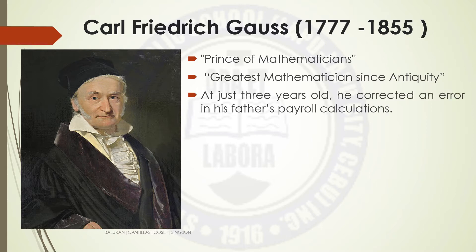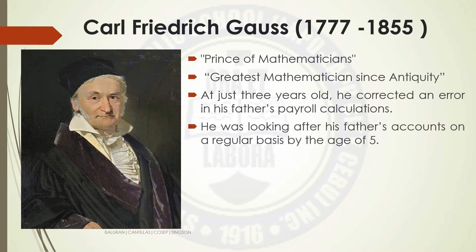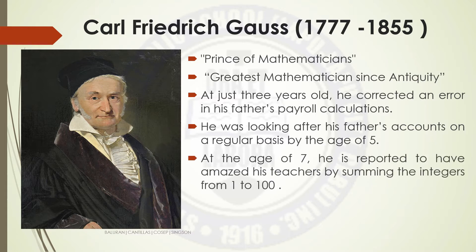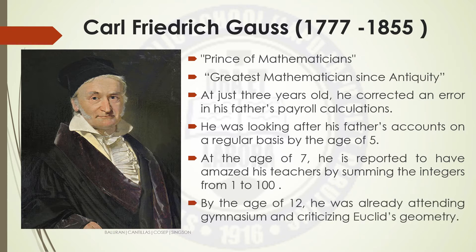At just 3 years old, he corrected an error in his father's payroll calculations. He was looking after his father's accounts on a regular basis by the age of 5. At the age of 7, he is reported to have amazed his teachers by summing the integers from 1 to 100. By the age of 12, he was already attending gymnasium and criticizing Euclid's geometry.